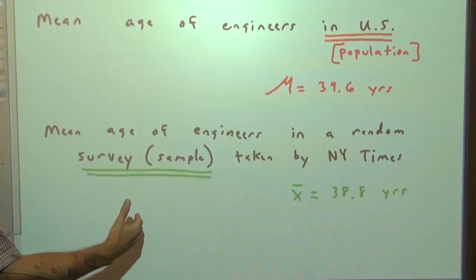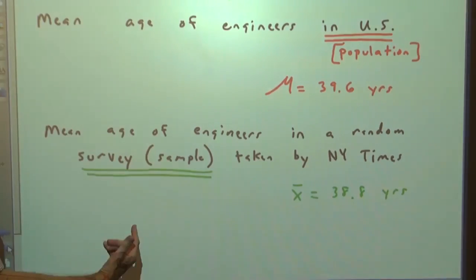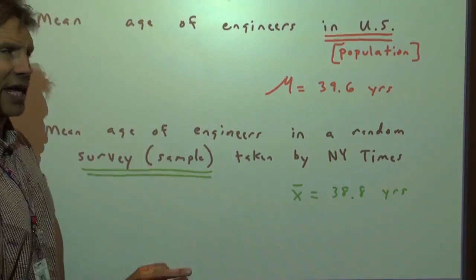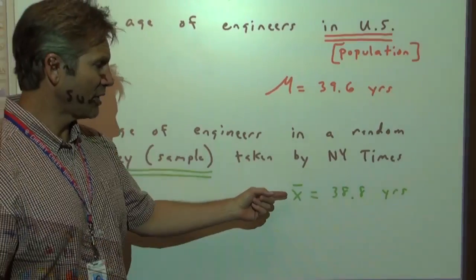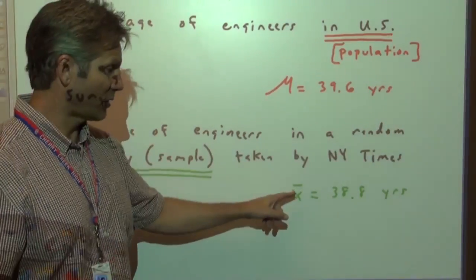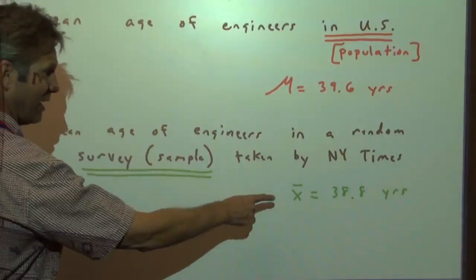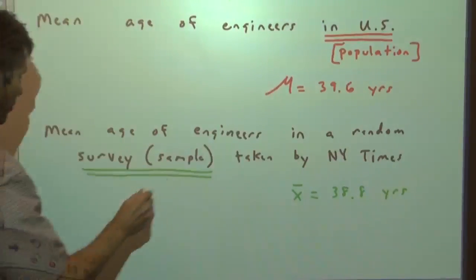But if instead someone took a survey like the New York Times and they got a mean average, well that mean average only came from a sample, so we give it this symbol, x bar. So this is a sample mean, that's a population mean. A sample statistic, a population parameter.